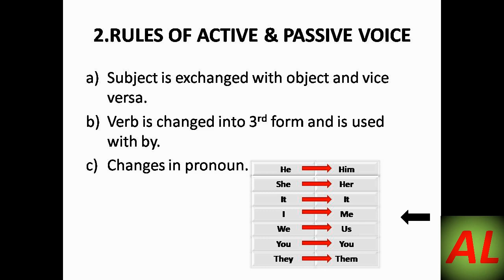Pronouns are words we use instead of a name of a person or thing. When a pronoun appears in an active voice sentence, it changes in passive voice. For example, 'he' changes to 'him.' This applies to all pronouns: 'she' becomes 'her,' 'it' remains 'it,' 'I' becomes 'me,' 'we' becomes 'us,' 'you' remains 'you,' and 'they' becomes 'them.'